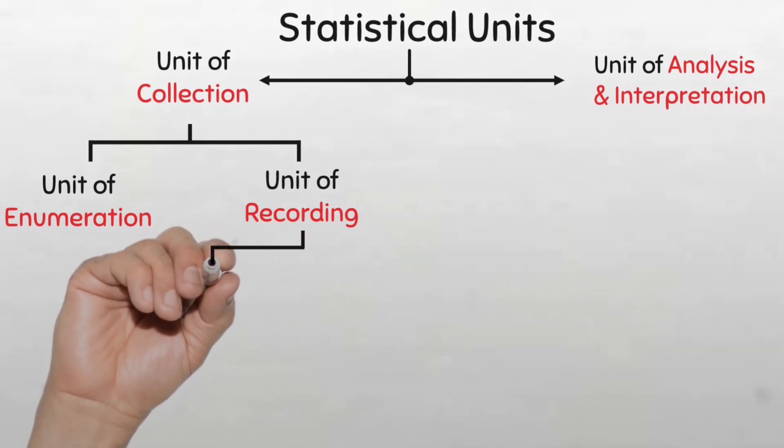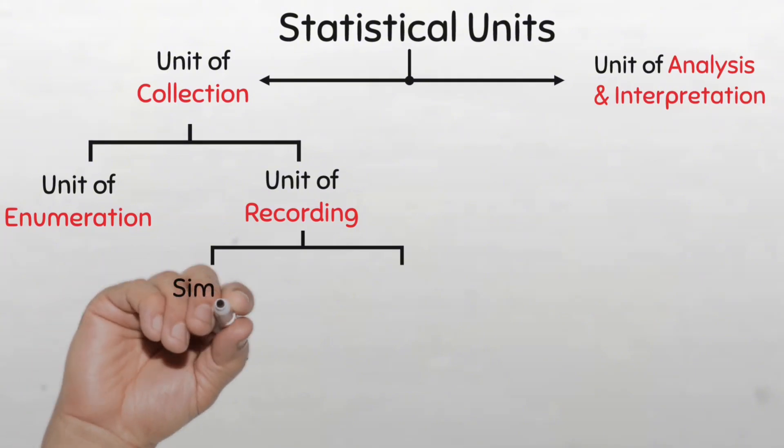This unit of recording can either be simple units or composite units. Simple units, when what is measured or recorded is basic, single and cannot be broken down into smaller units. For example, the age of respondents in a survey. This is just one type of variable and is not a combination of variables, hence the word simple unit.